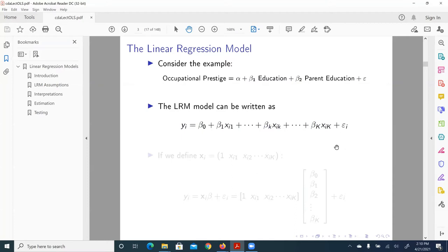So here i is the sub index to denote individual cases. And the second subscript for x corresponds to indexes variable. So for example, this is the first variable. This is the second, this is the kth variable.